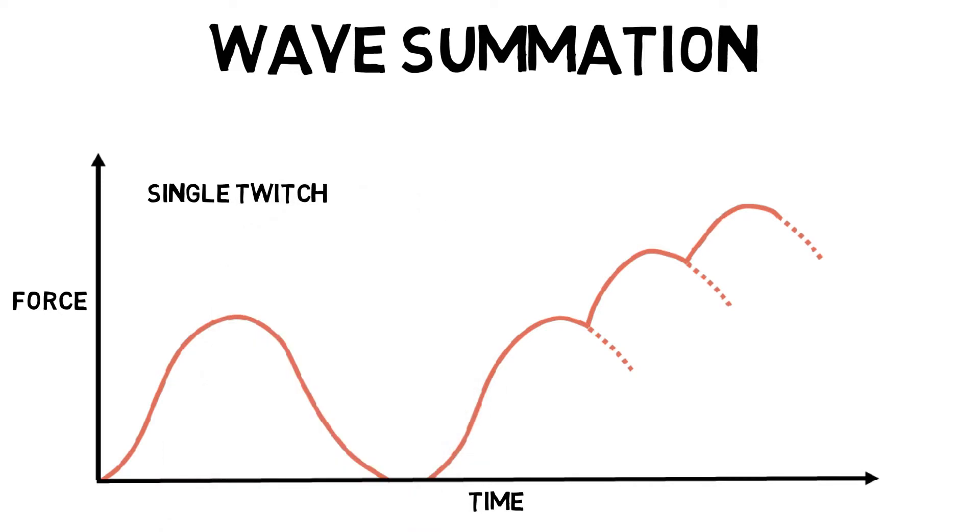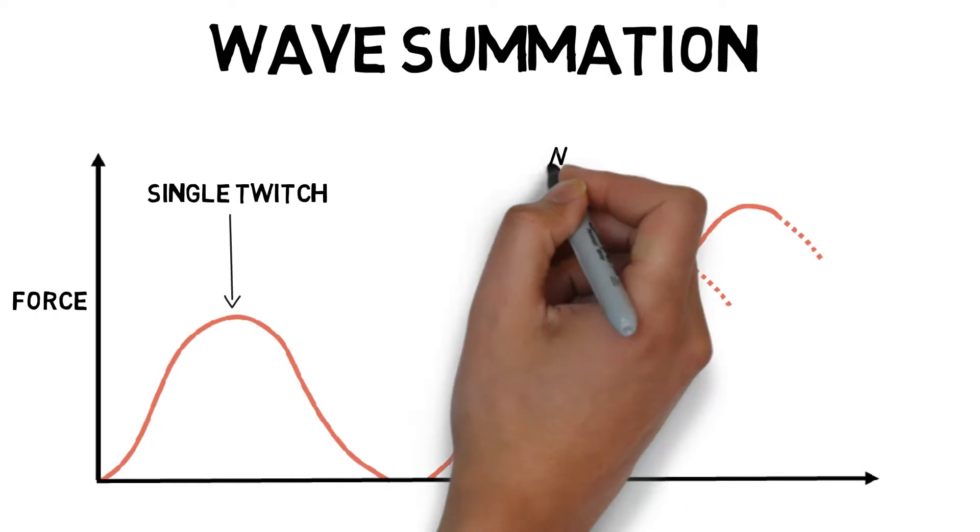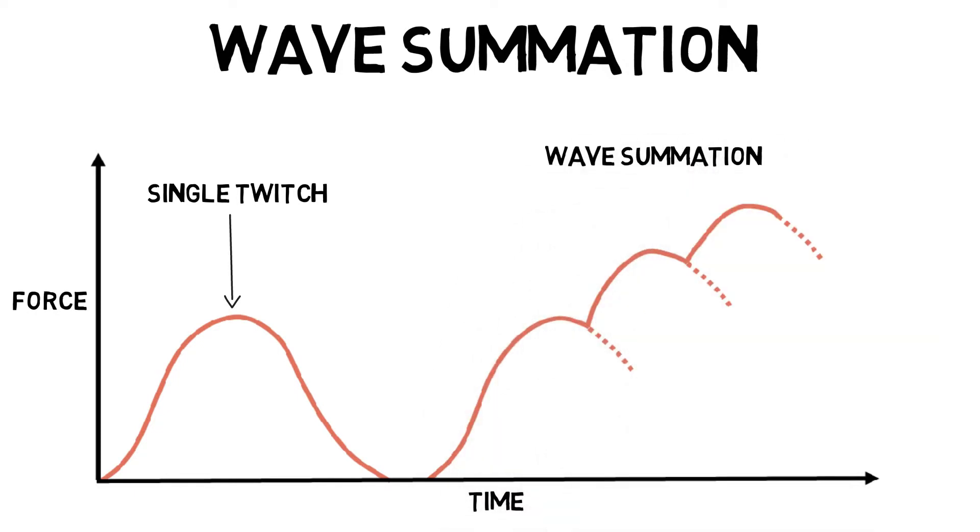In isolation, a single muscle twitch cannot produce a great amount of force. Wave summation is an increase in muscle contraction strength based on how rapidly a muscle is stimulated. Muscles that are repeatedly stimulated are not able to relax between repetitive stimulations, which creates strong contractions due to the effect of each wave being added to the previous one.